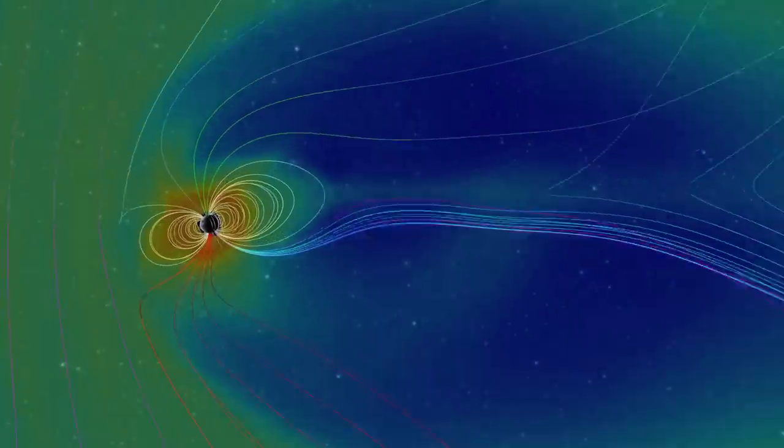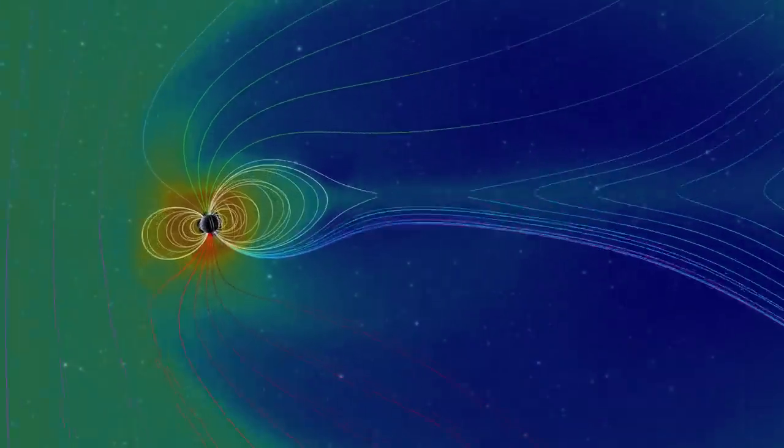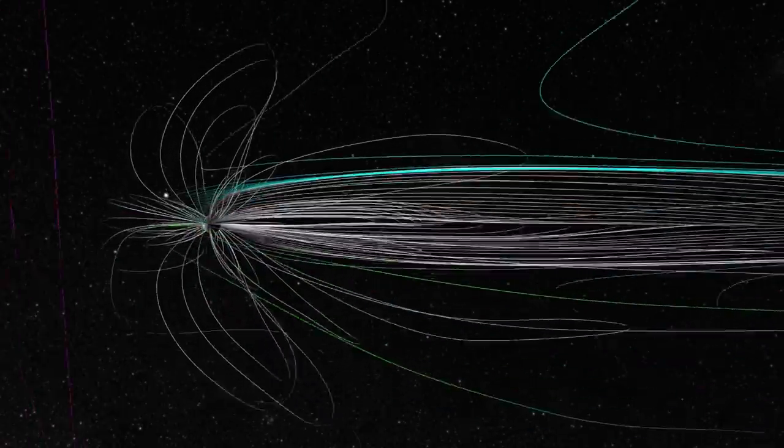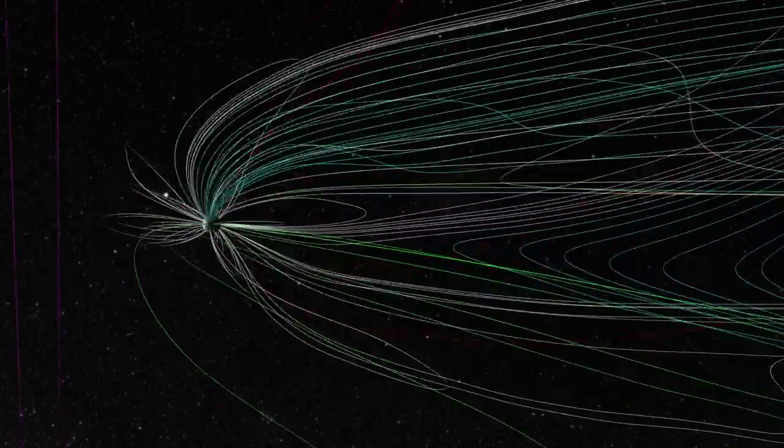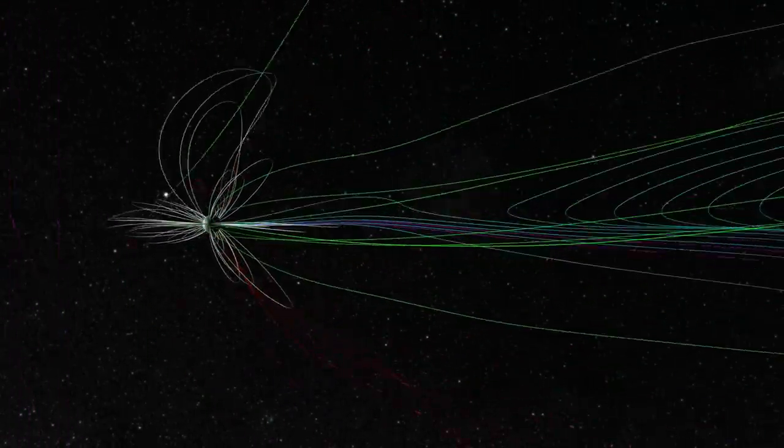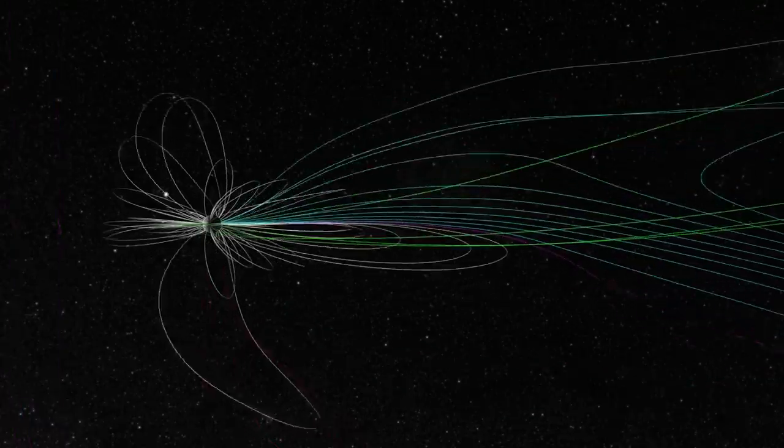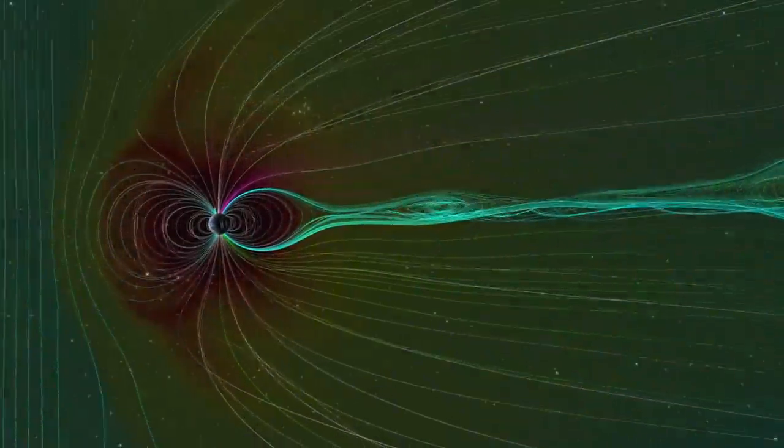A Carrington scale event is a different story. It severely compresses Earth's magnetic field, while packing the boundary with plasma.